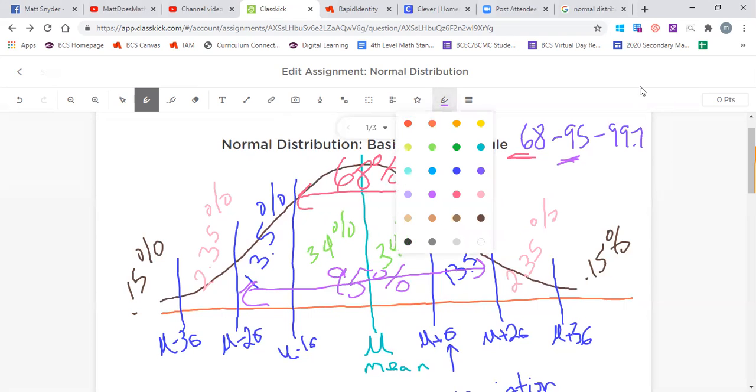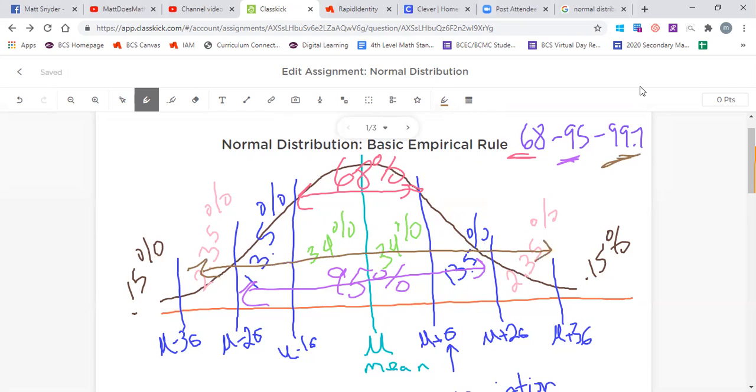And as we work our way all the way out, let's pick a fun color. Let's go with purple. That's a fun color. Then what we do is we go all the way from here to here on the outside. That is our 99.7% of the data. And that's how that rule works.